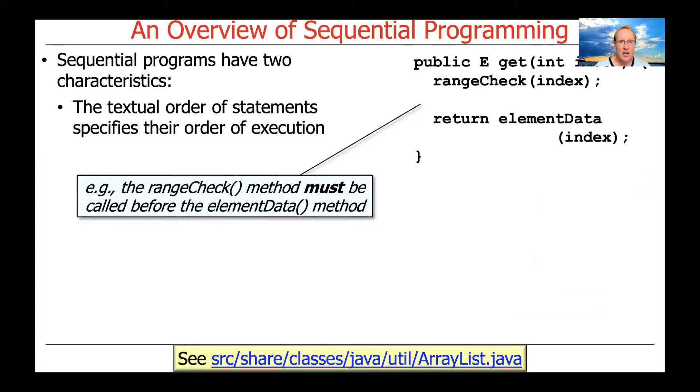Sequential programs have two characteristics. First, the textual order of statements specifies their order of execution. If you take a look at this code here, this is a little snippet from the get method that's part of Java's ArrayList implementation. You can see the first thing it does is a little range check to make sure the index is in bounds. Assuming that the index is in bounds, it goes ahead and indexes into an array and returns the indexed element. And because the code is sequential and therefore deterministic, the range check method must be called before the element data method. So it always executes from top to bottom, left to right. That's just another way of saying it's deterministic.